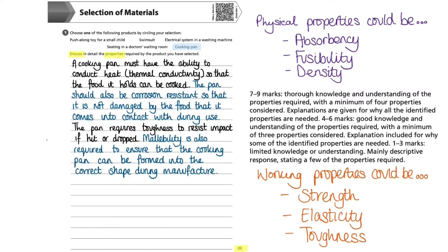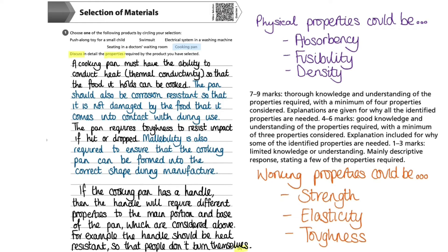So far I have talked about the base and main body of the pan. However, it would be good practice to also discuss the handle and acknowledge that it will have some contrasting properties to the main body. For example, the handle must be heat resistant so that people do not burn themselves when holding the cooking pan.